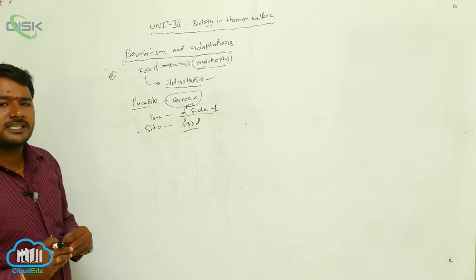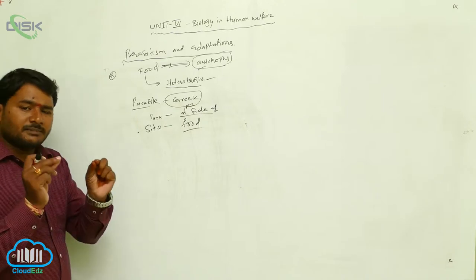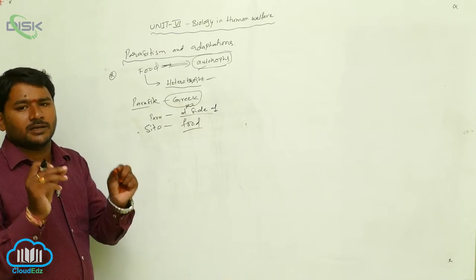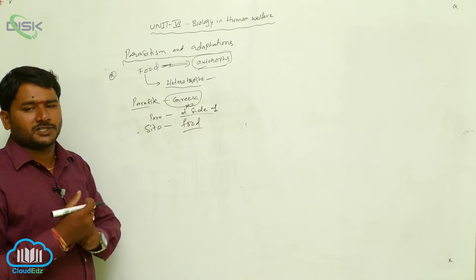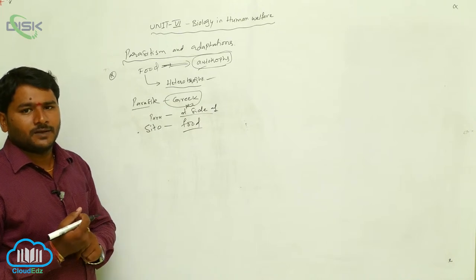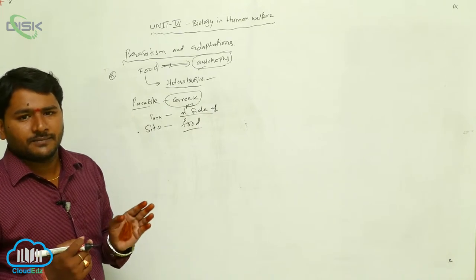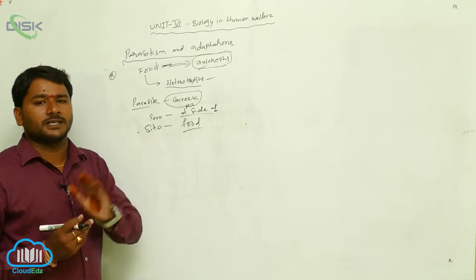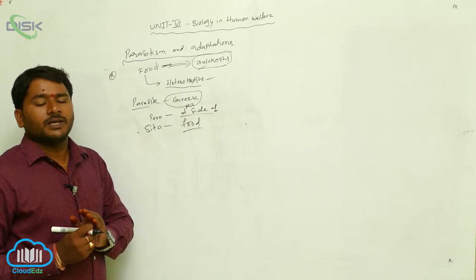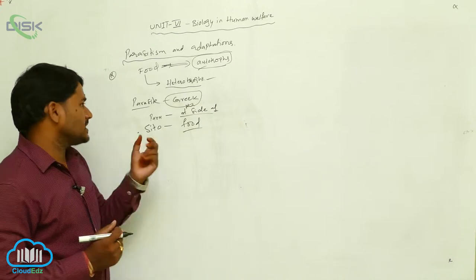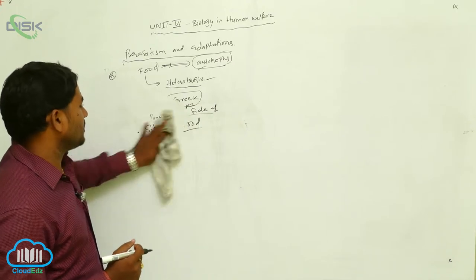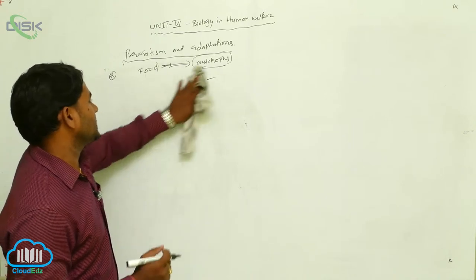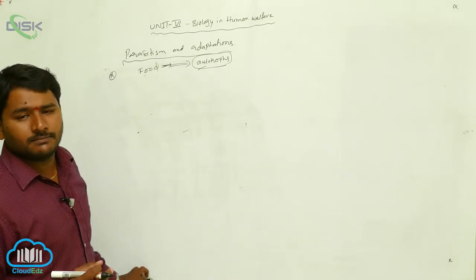Parasitism is nothing but an intimate association between two organisms belonging to different species. One is getting benefit and another one is harmed or affected. That is called as parasitism.